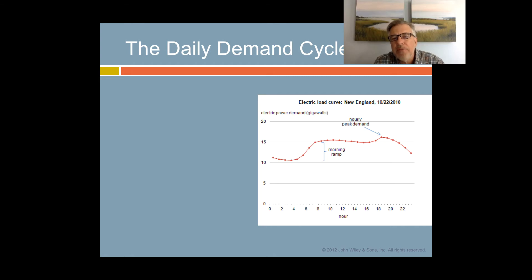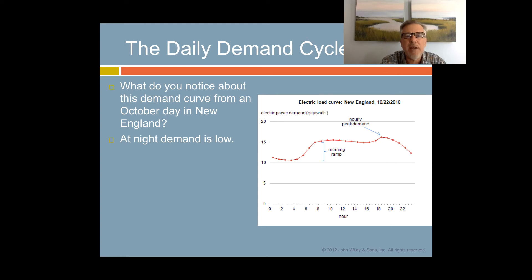Here we have the demand for electric current from New England on October 22, 2010. I want you to take a second to just look at this, maybe pause the video when I'm done talking, and see what pattern you've noticed here. What you probably noticed is that at nighttime, from 0 o'clock to about 5:30 in the morning, there is low demand. Then as people wake up and get going, the demand ramps up. It's called the morning ramp.